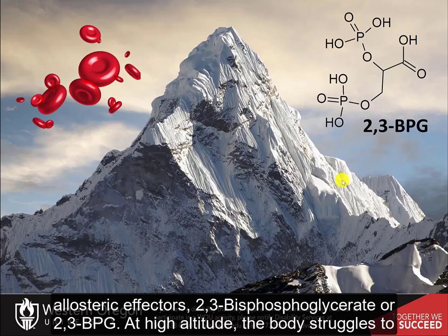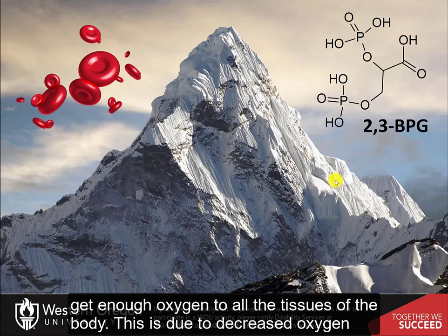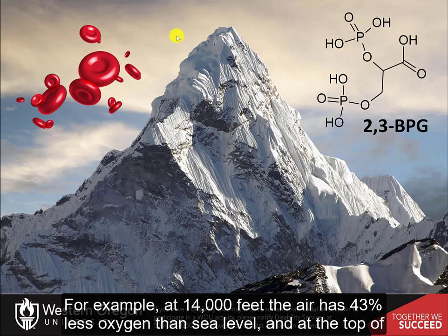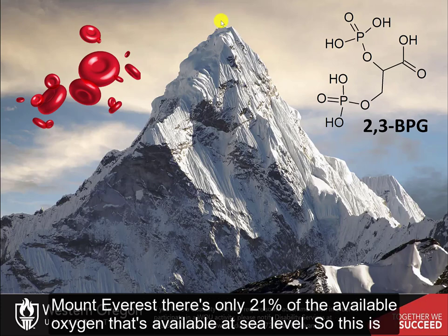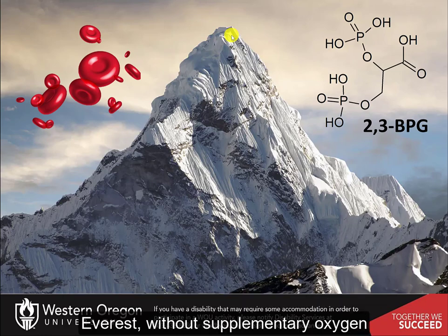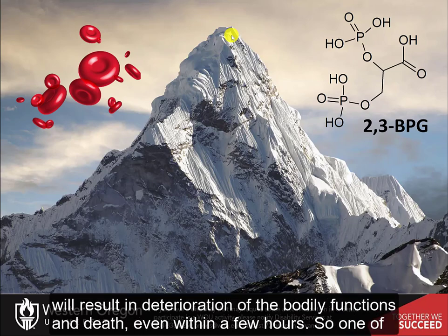At high altitude, the body struggles to get enough oxygen to all tissues due to decreased oxygen availability. At 14,000 feet, the air has 43% less oxygen than at sea level. At the top of Mount Everest, there is only 21% of the oxygen available at sea level. This is known as the death zone — extended stay above 8,000 meters without supplementary oxygen will result in deterioration of bodily functions and death, even within a few hours.